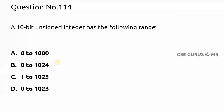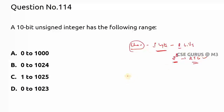Question 114: a 10-bit unsigned integer has what range? To calculate: a character type uses 1 byte = 8 bits, so it can store 2 power 8 = 256 values. For unsigned char, that's 0 to 255. For signed char, it's −128 to +127 (i.e., −2^7 to 2^7 − 1). For integer using 4 bytes = 32 bits: unsigned is 0 to 2^32 − 1; signed is −2^31 to 2^31 − 1.